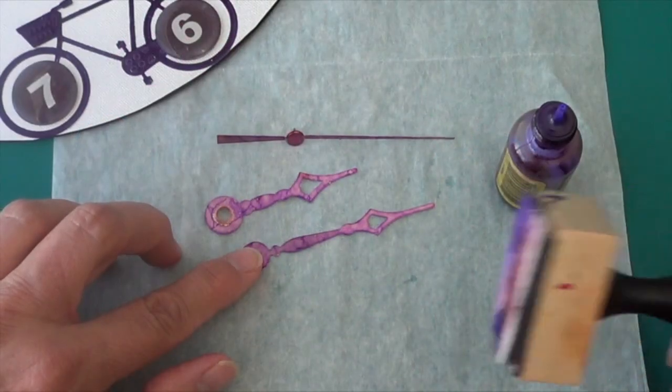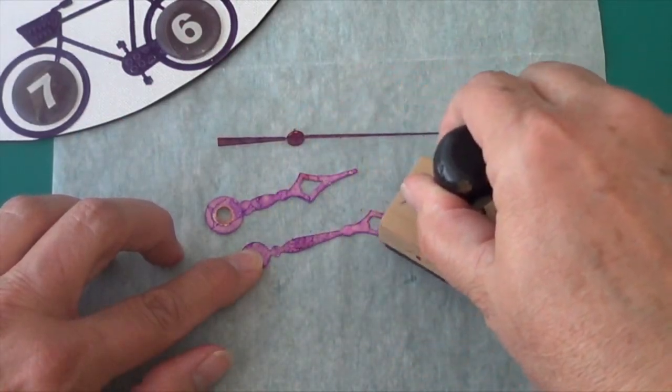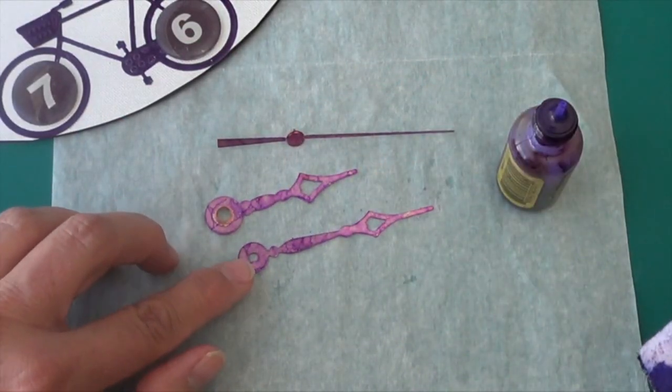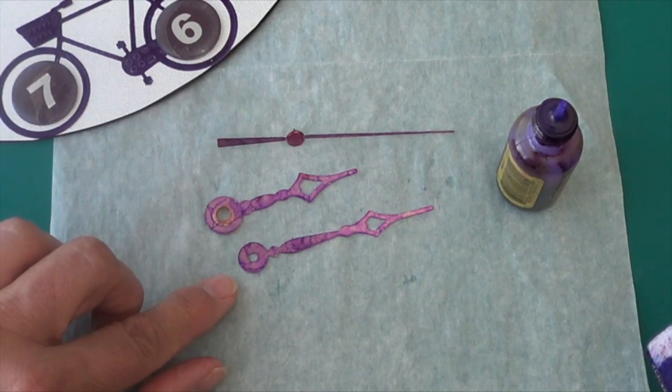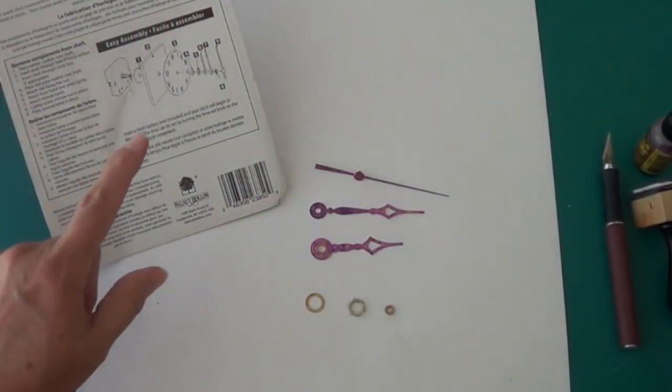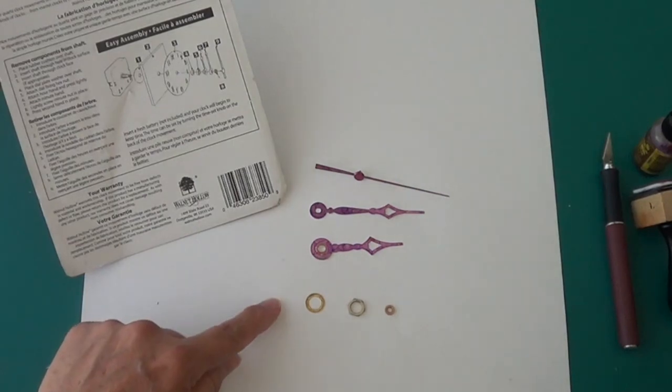If you don't like the gold tone of the clock hands that come with the kit, you can dab some alcohol ink to change the color. Now just follow the instructions on the package of the clock kit to fit all those little pieces together.